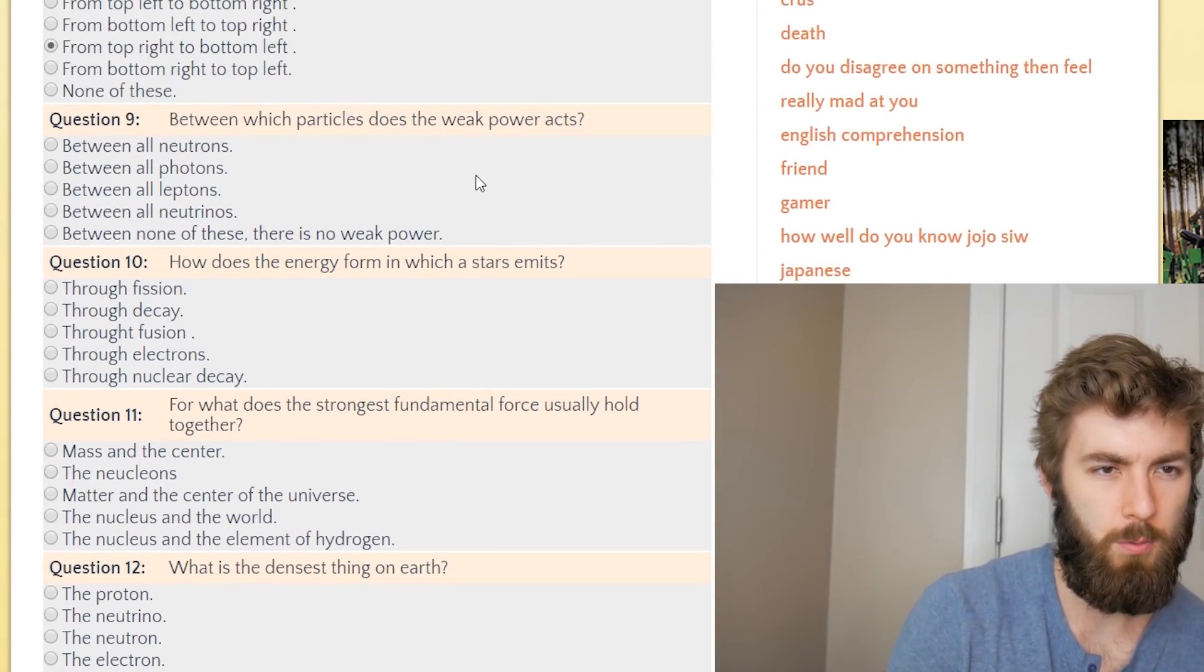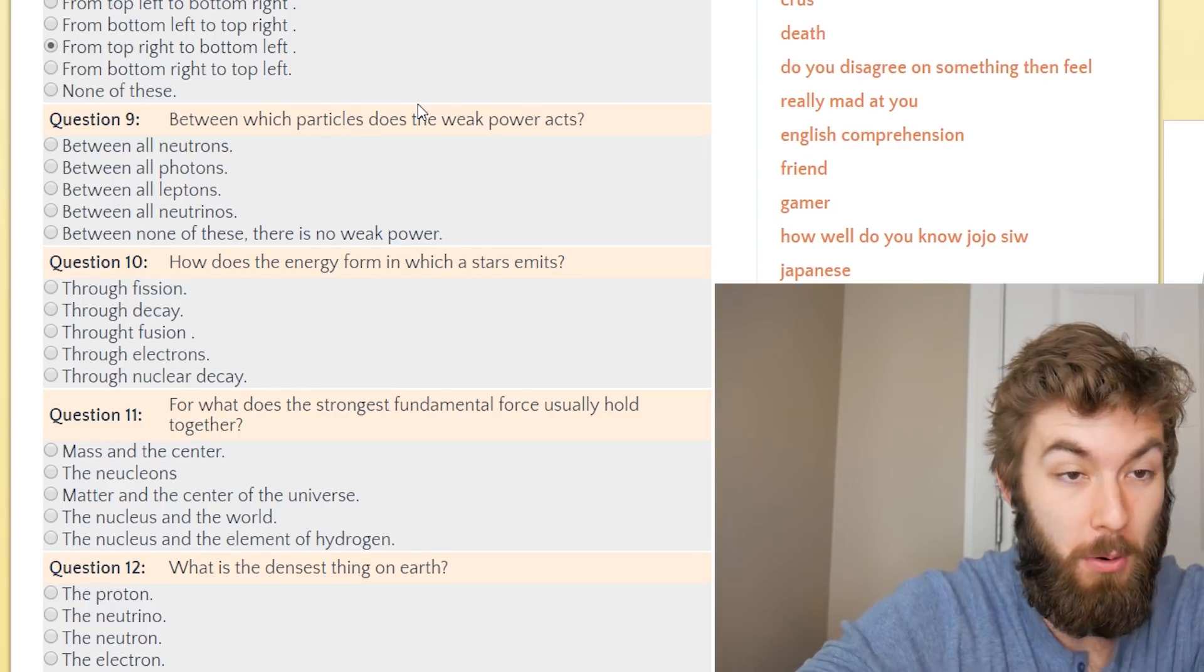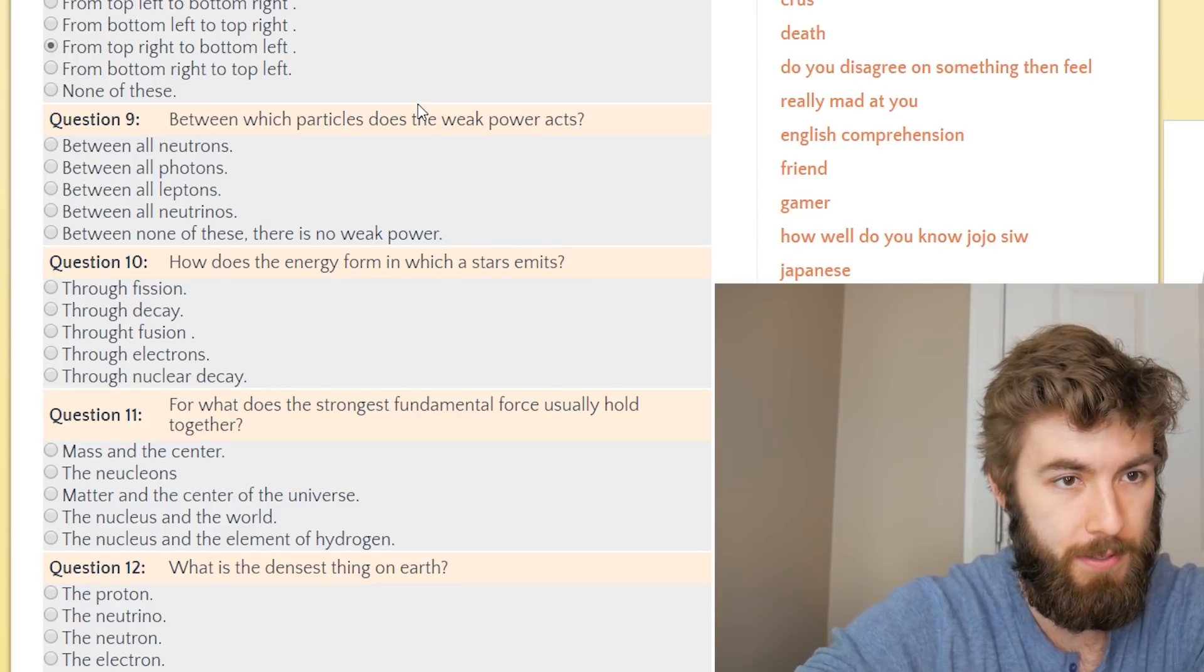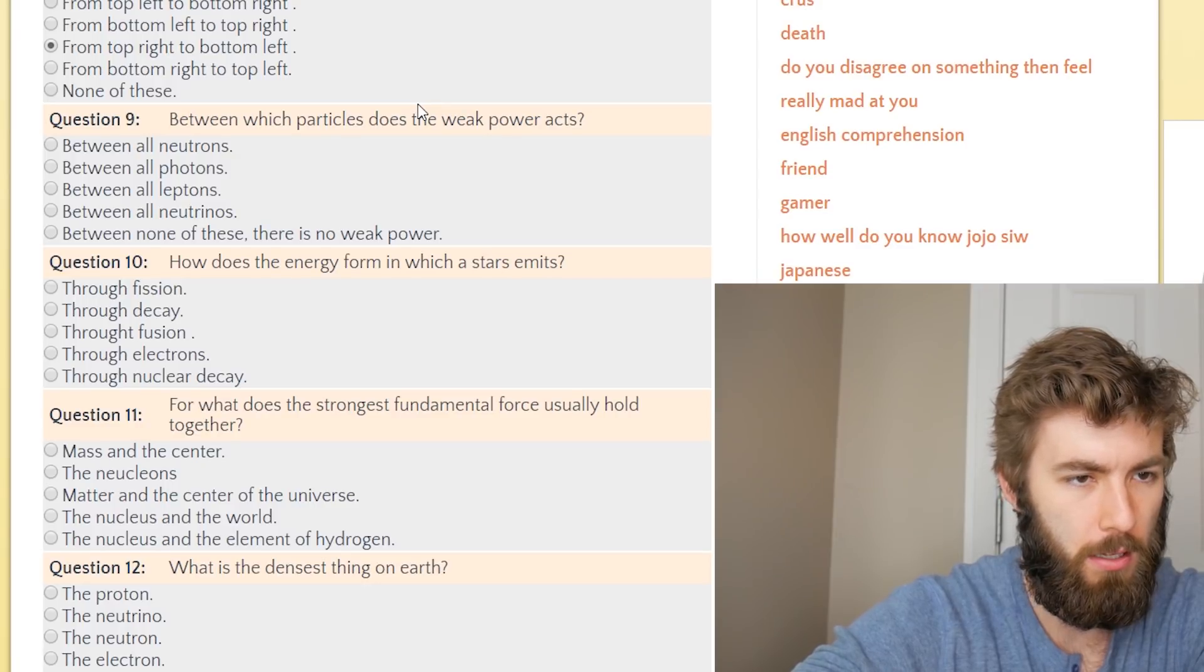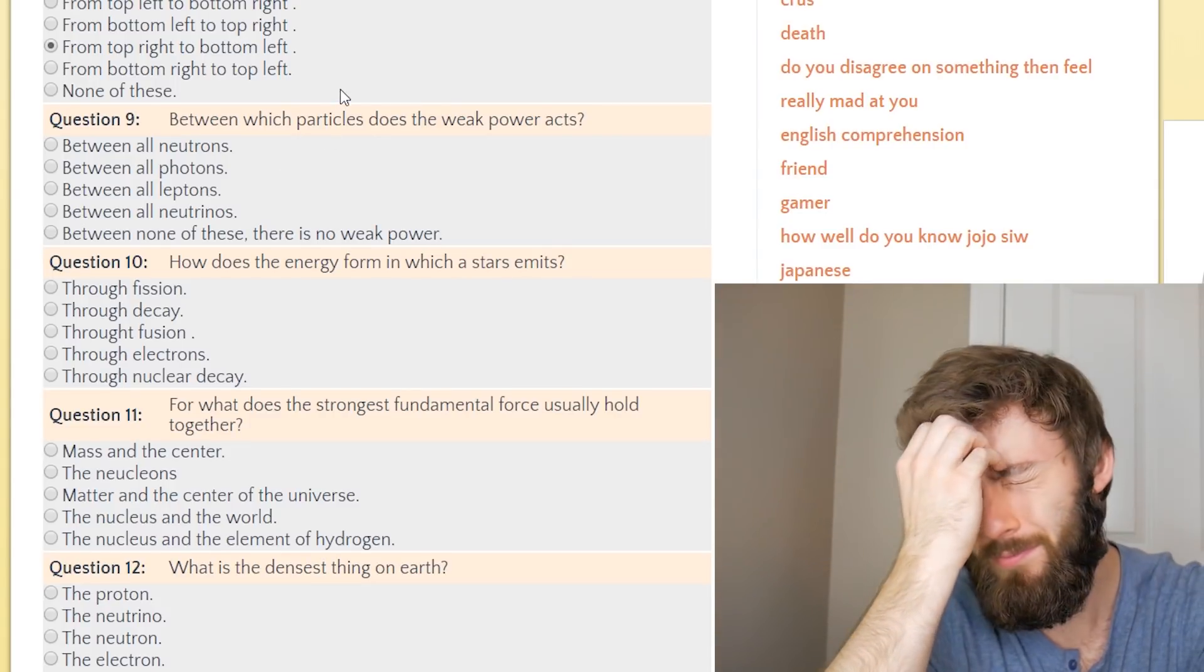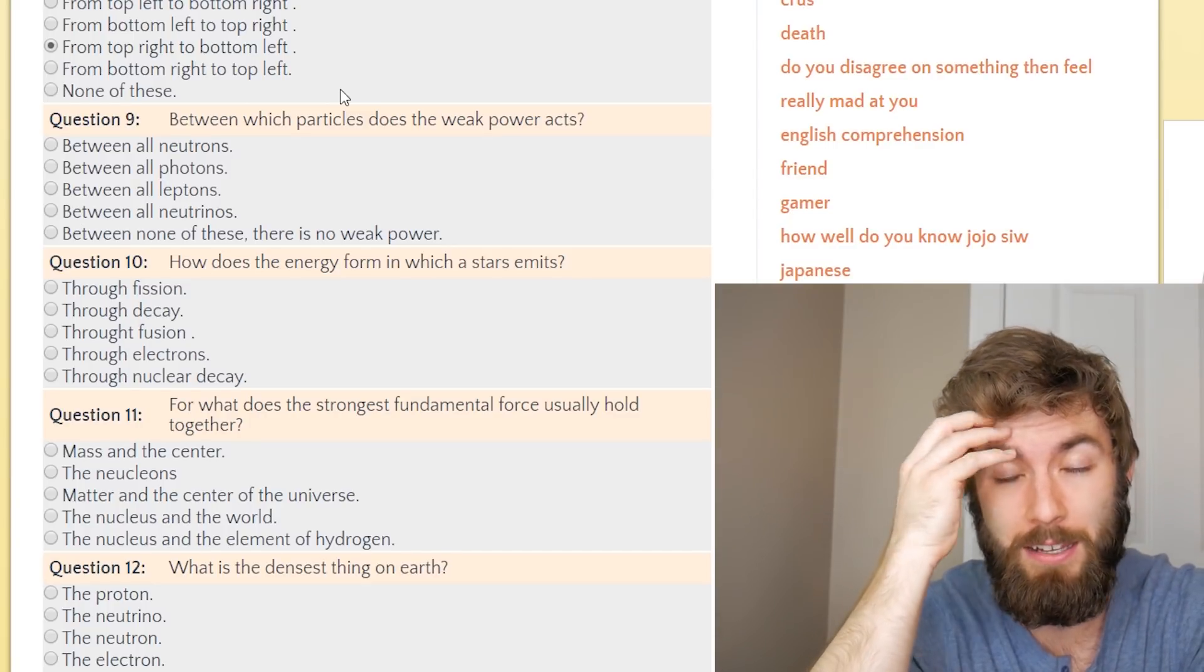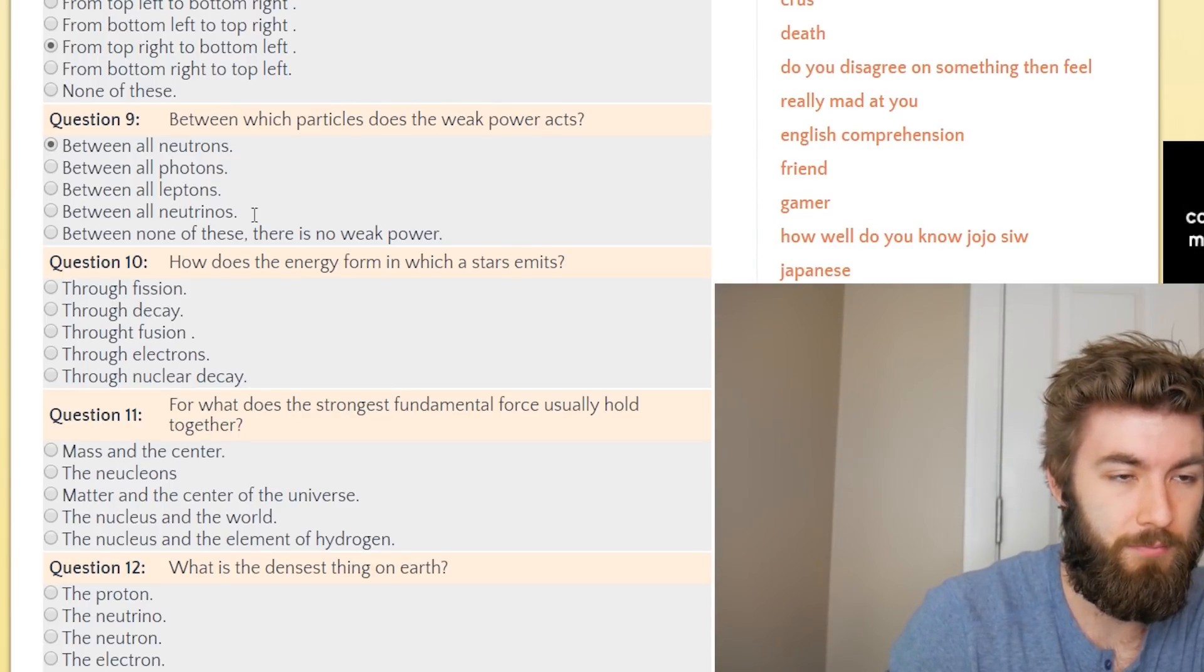Which particles does the weak power act? Between all neutrons, between all photons, between all leptons, and between all neutrinos. Which is the weak power acts? So weak interaction, we have stuff that's responsible for decay. I'm going to assume that that's still neutrons in this.